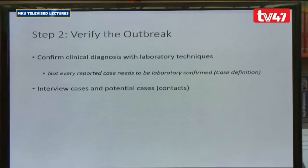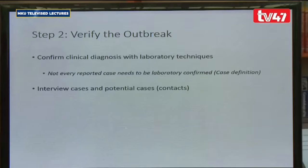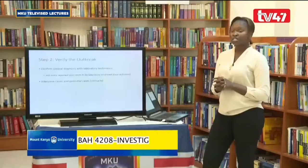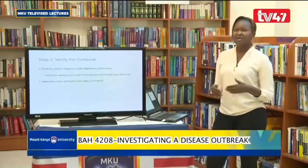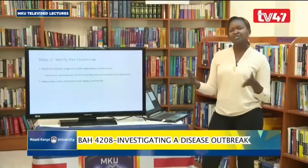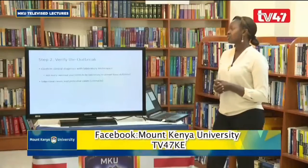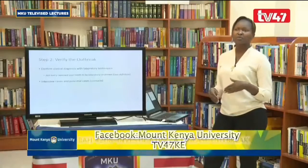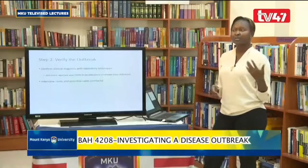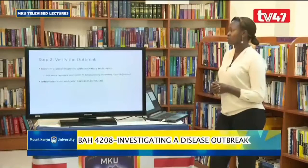Step number two is to verify the outbreak. Verification is done by confirming the clinical diagnosis, and this is done in the lab. Not every case is supposed to be tested. Just because you are showing signs that may suggest you have the disease does not mean you have to be tested. You also need to interview cases — the people showing clinical signs — and interview contacts, those who have come into contact with someone who has tested positive or is suspected to have the disease.